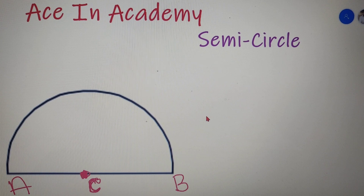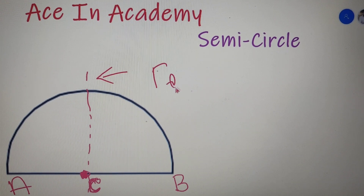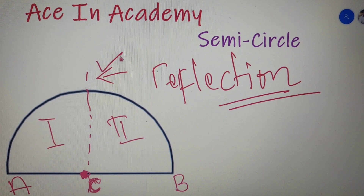Now let us check some interesting facts about a semicircle. A semicircle has only one axis of symmetry — a reflection axis of symmetry. If I draw a straight line that passes through the center of the semicircle and is perpendicular to the base, that line is the axis of symmetry. You can easily see that part 1 and part 2 are symmetrical about this line.